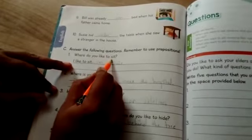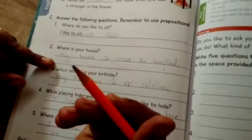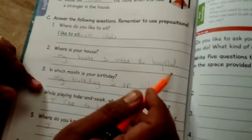Where do you like to sit? I like to sit on chair. Where is your house? My house. My house is near the hospital.